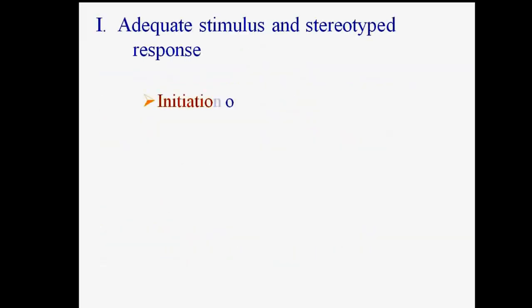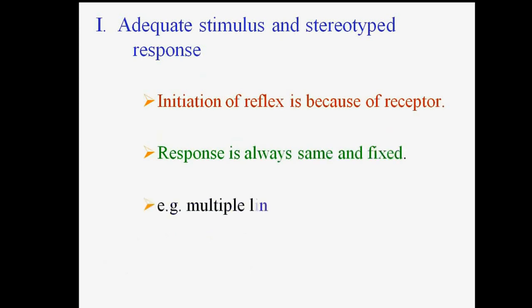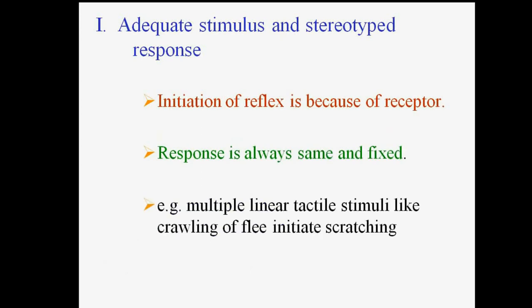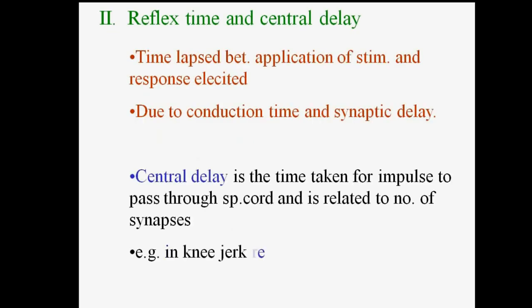The first important property is adequate stimulus and stereotype response. This means the initiation of a reflex is because of a receptor, and the response is always the same and fixed. For example, multiple linear tactile stimuli like the crawling of a flea initiate scratching.